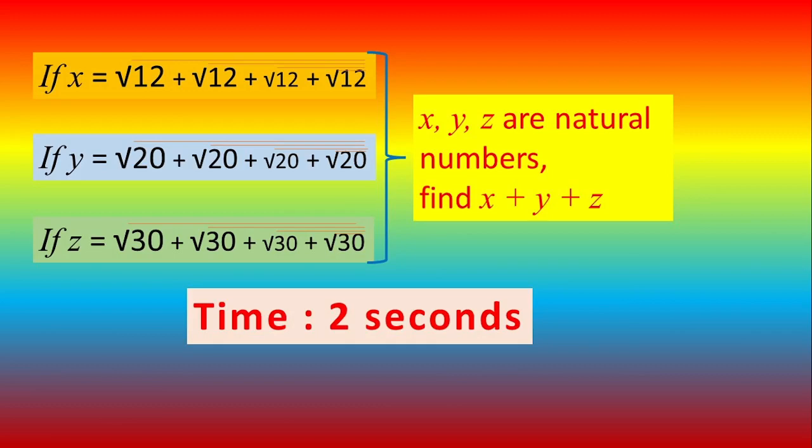The first is x, the second is y and the third is z and the square root then again square root, but note that there is a plus sign between the numbers. x, y, z are given to be natural numbers, then find x plus y plus z and you are given time only two seconds.